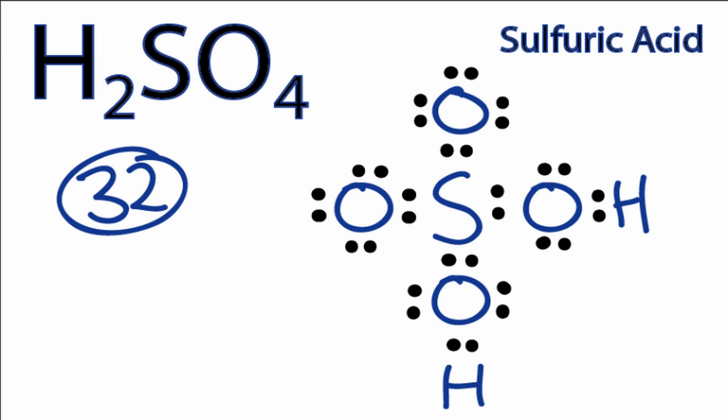So this looks like a pretty good Lewis structure for H2SO4. We've used all 32 valence electrons, and each of the atoms has a full outer shell.